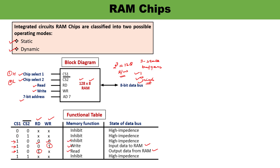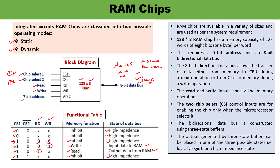Similarly, when CS1 must be active high but is active low, none of the operations will be performed and the chip will be in the high impedance state. When both CS1 and CS2 are high, that also results in an inhibit memory function — high impedance state. So only the condition where CS1 is active high and CS2 is active low enables operation: when the read line is 1, a read operation is performed; when the write line is 1, a write operation is performed. This is how you can explain the block diagram and functional table of RAM chips.